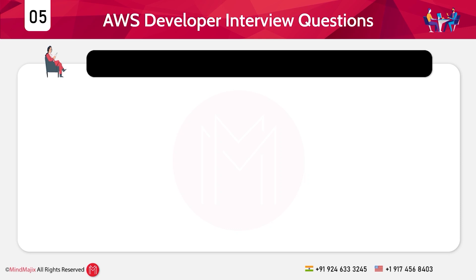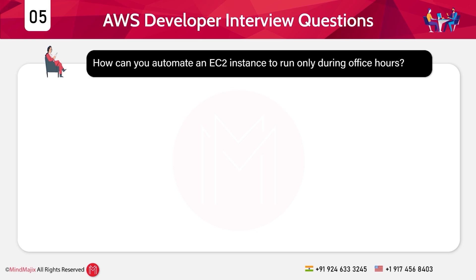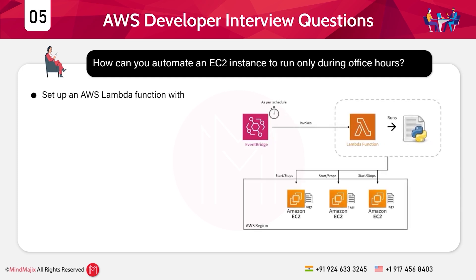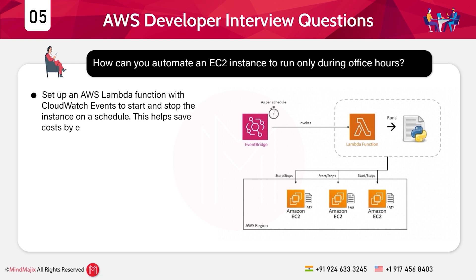Question 5: How can you automate an EC2 instance to run only during office hours? Answer: We can set up an AWS Lambda function with CloudWatch Events to start and stop the instance on a schedule. This helps save costs by ensuring the instance only runs when needed and is stopped outside office hours.